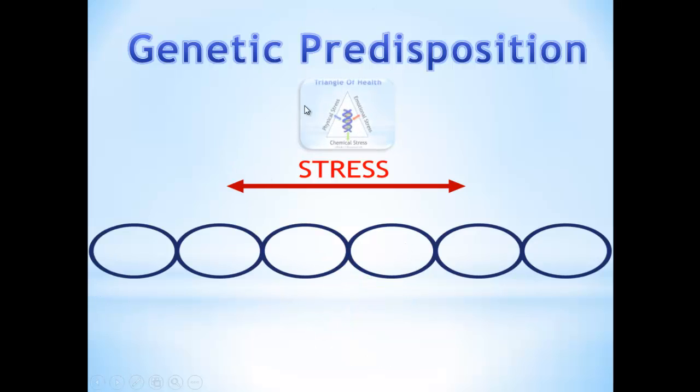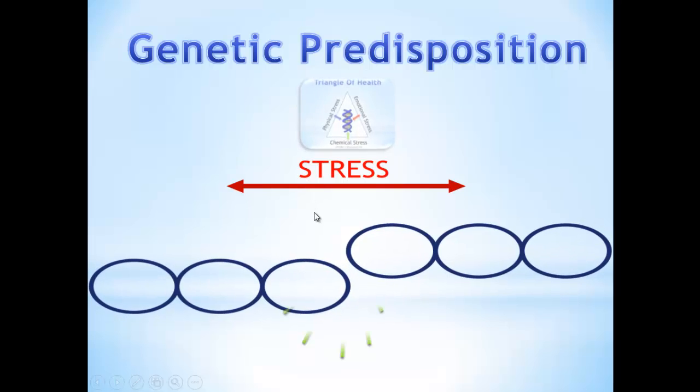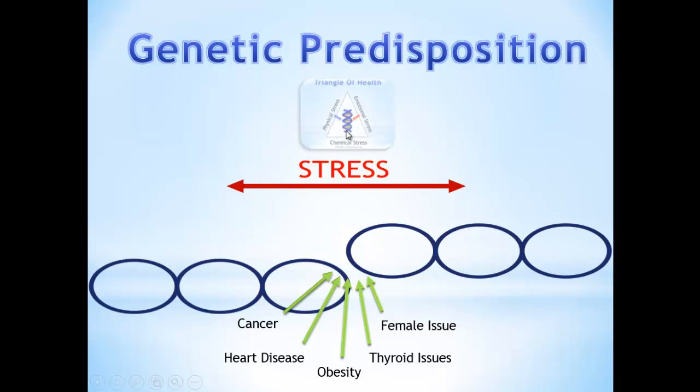If we continue to keep that stress on there, the chain will eventually break. Medications could help with the symptoms. Maybe if it's an infection it actually addresses the stress. But for most chronic disease, medication only covers up symptoms and does not actually take the stress off the chain and let the chain go back together.